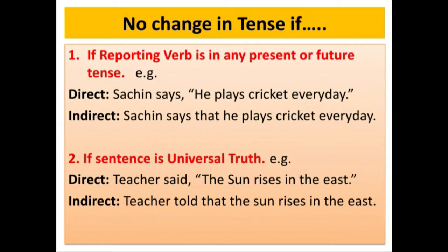Another exception: if the sentence is a universal truth. For example, 'The teacher said, the sun rises in the east.' In indirect speech: 'The teacher told that the sun rises in the east.' There is no change in tense because the sentence is a universal truth — a truth that holds yesterday, today, and tomorrow. Similarly, 'Water boils at 100 degrees Celsius' is a universal truth and there is no change in its tense.